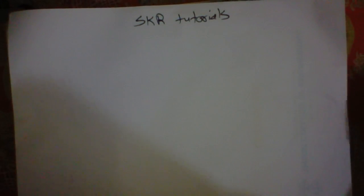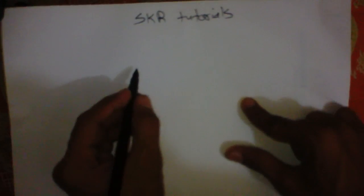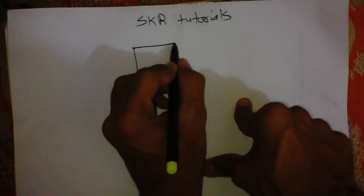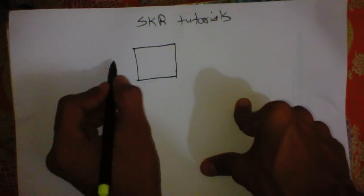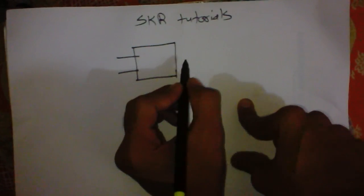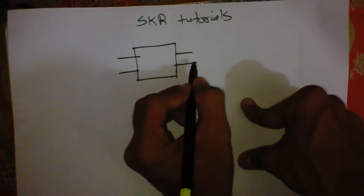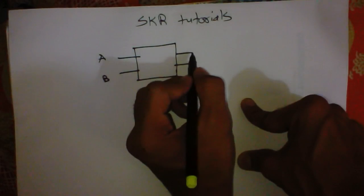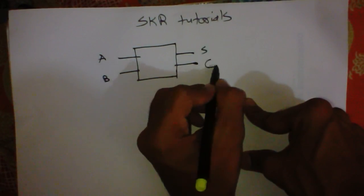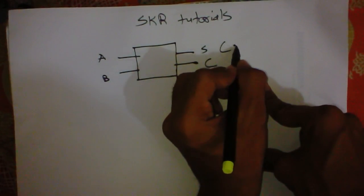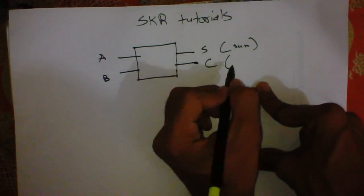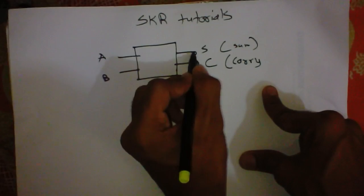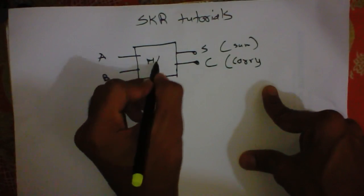First is the half adder. I draw here the block diagram of the half adder. It is very easy, nothing is complicated. It has two inputs and two outputs. Let's assume two inputs are A and B, and two outputs are: first is sum and second is carry. This is sum and this one is carry. So this is the half adder.